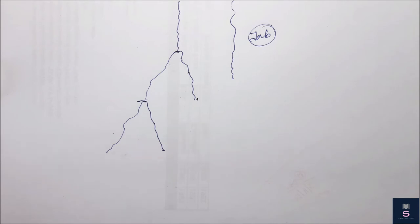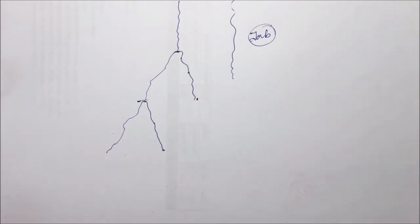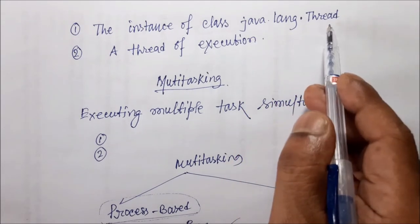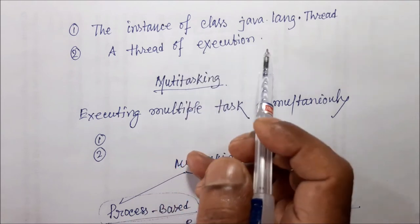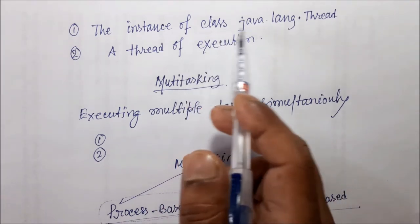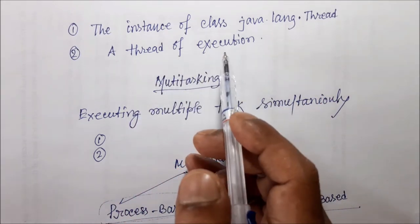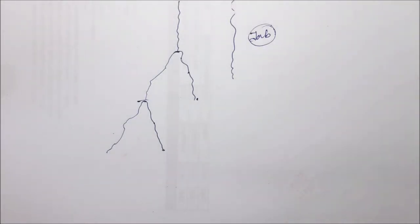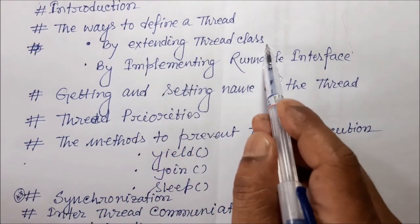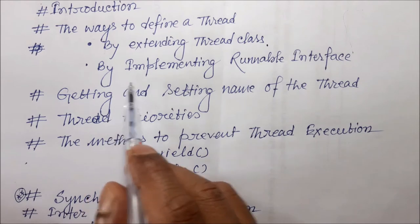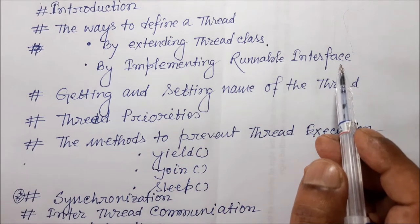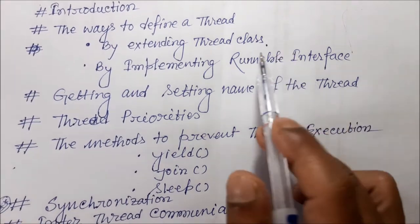How many ways can we create a thread? There are two ways we can define a thread. A thread class belongs to the java.lang package. A thread is an instance of the class java.lang.Thread. There are two ways to define a thread: first, by extending the Thread class, and the second approach is by implementing the Runnable interface. Let us discuss the first one — how to extend a Thread class.